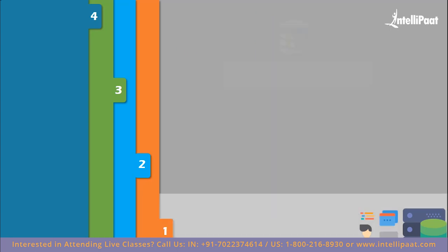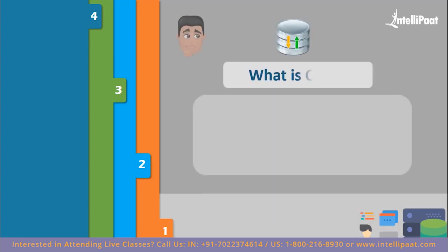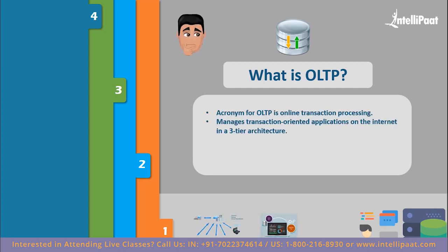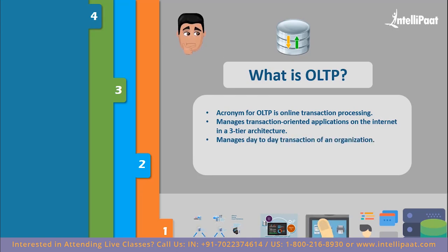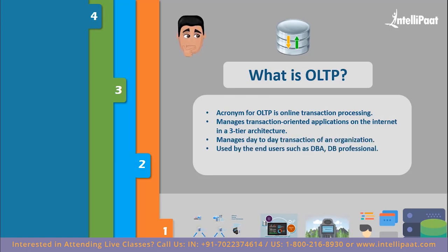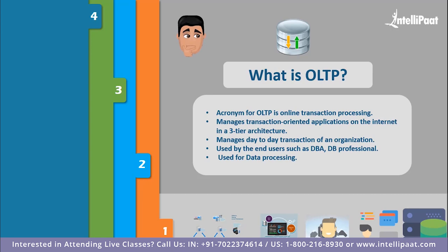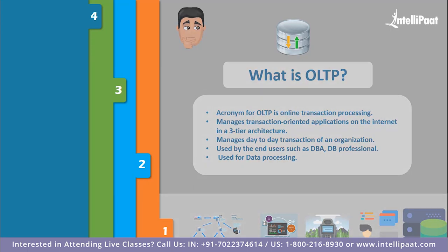Moving forward — what exactly is OLTP? The acronym for OLTP is Online Transaction Processing. It is a system that manages transaction-oriented applications on the internet in a three-tier architecture. It is used by end users such as database administrators and database professionals, and OLTP manages day-to-day transactions of an organization using data processing.